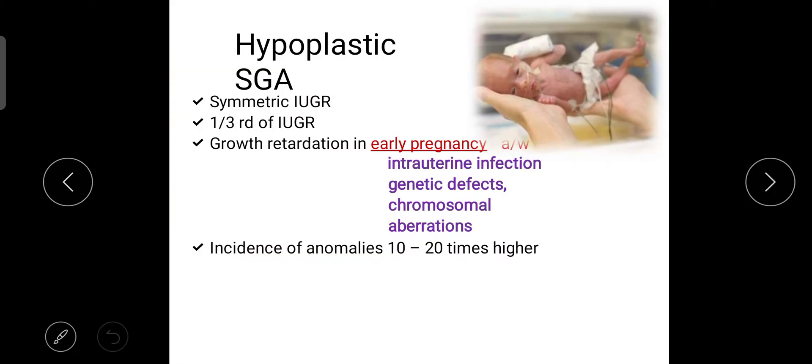Next one is hypoplastic small for gestational age. It is symmetric intrauterine growth retardation. It is one-third of IUGR. It is growth retardation in early pregnancy. Intrauterine infection, genetic defects, chromosomal embryonic infection can cause it. And incidence of anomalies is 10 to 20% higher in this case.